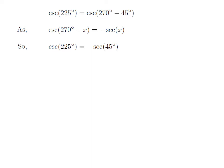Let us apply the above identity for cosecant of 225 degrees. Here x is 45 degrees, so cosecant of 225 degrees is equal to minus secant of 45 degrees.